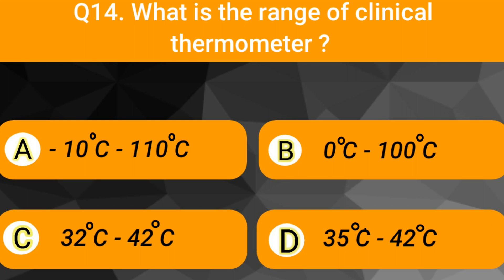Which among the following is an insulator? Wood. What is the range of clinical thermometer? 35 degrees Celsius to 42 degrees Celsius.